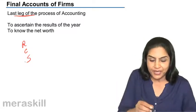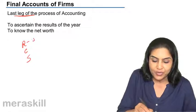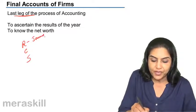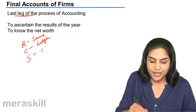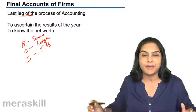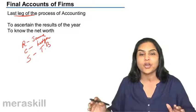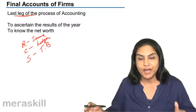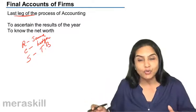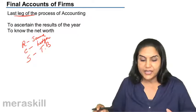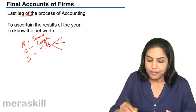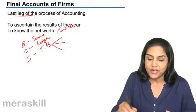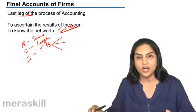Let us start with the beginning. Recording, which we said was the journal; classifying, which we said is the ledger; summarizing in the form of a trial balance so that we had a total of all ledger account balances. Having done this, from the trial balance we are now going to prepare the final accounts, or financial statements as they are called.